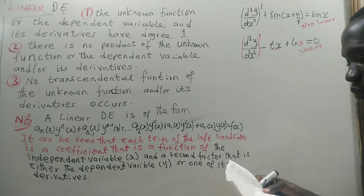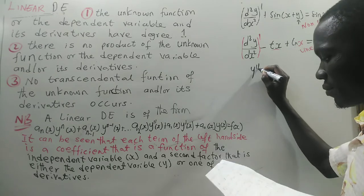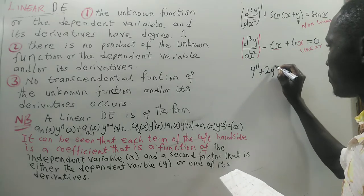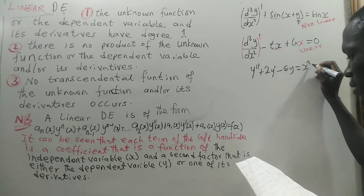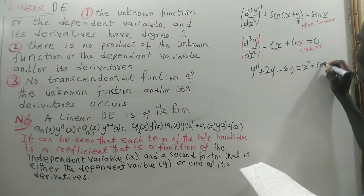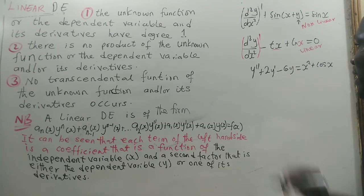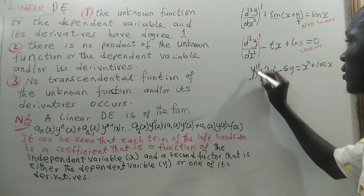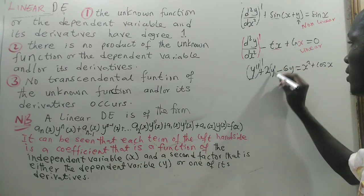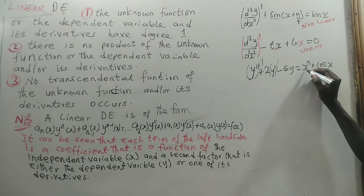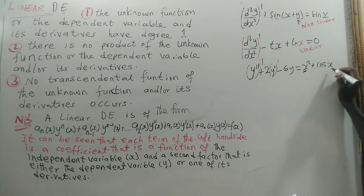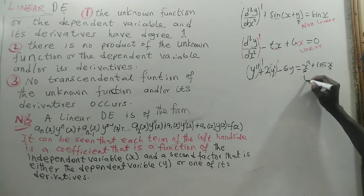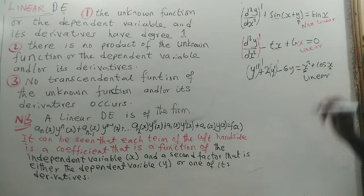Example 3: y'' + 2y' - 6y = x² + cos x. The degree of y'' is 1, the degree of y' is 1, x² involves the independent variable, and cos x is the cosine of the independent variable. So, this is also a linear differential equation.